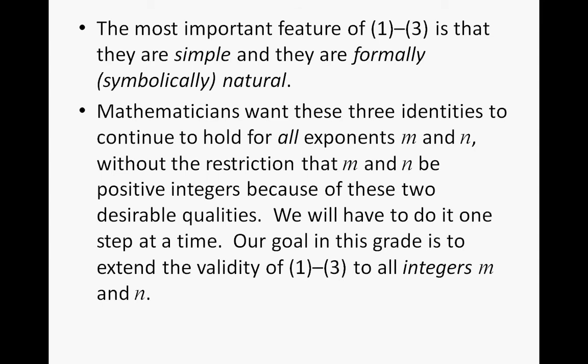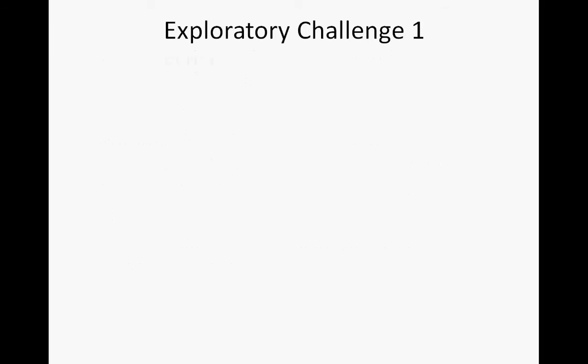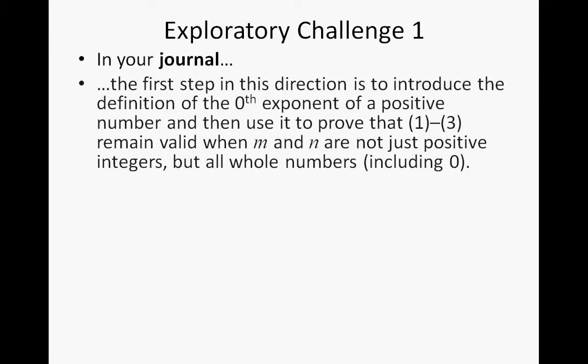We will have to do this one step at a time. Our goal in grade 8 is to extend the validity of equations 1 through 3 to all integers m and n, but we're going to start with whole numbers first. The first step is to introduce the definition of the 0th exponent of a positive number, and then use it to prove that equations 1 through 3 remain valid when m and n are not just positive integers but all whole numbers. Remember, a whole number is a positive integer and 0.